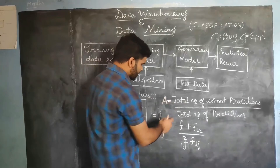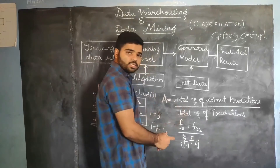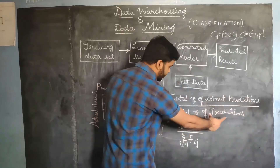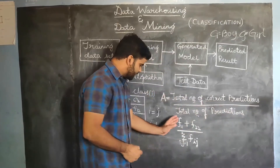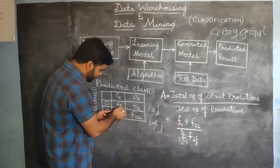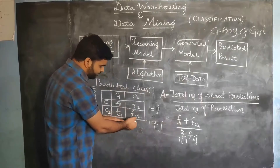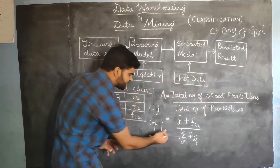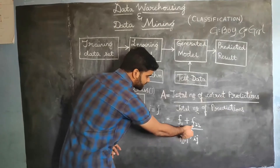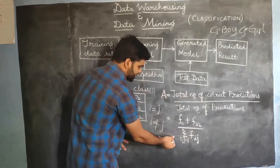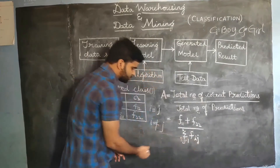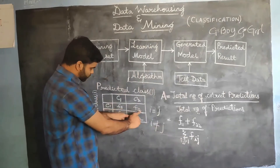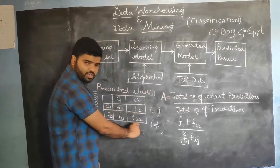The accuracy formula is: total number of correct predictions divided by total number of predictions. Since F11 and F22 are the correct predictions, accuracy equals (F11 + F22) divided by sigma Fij, which means F11 + F12 + F21 + F22.